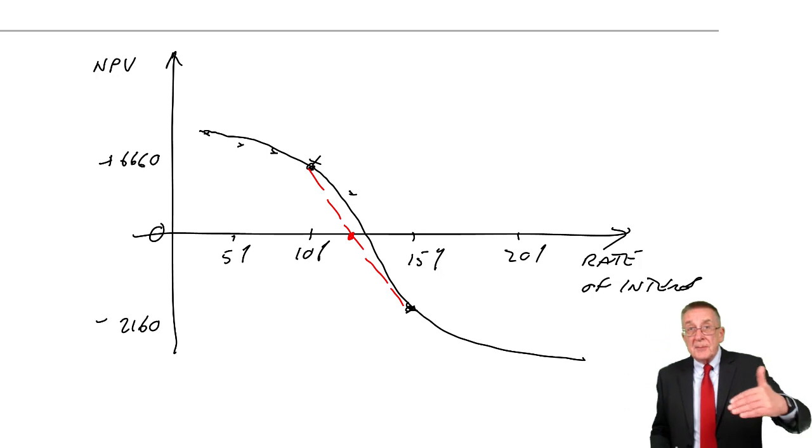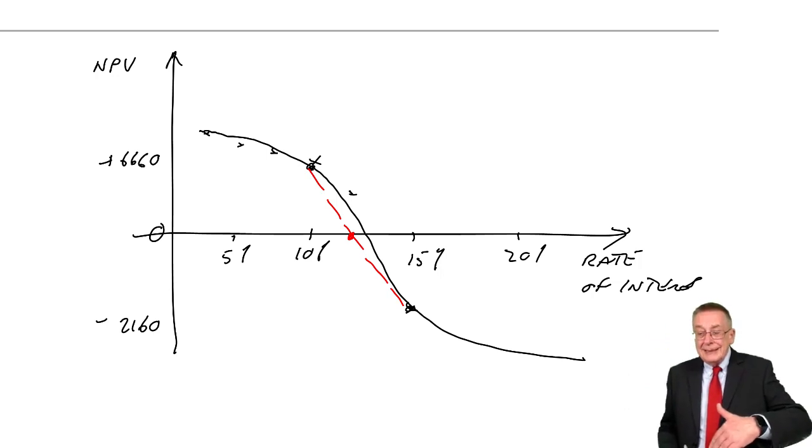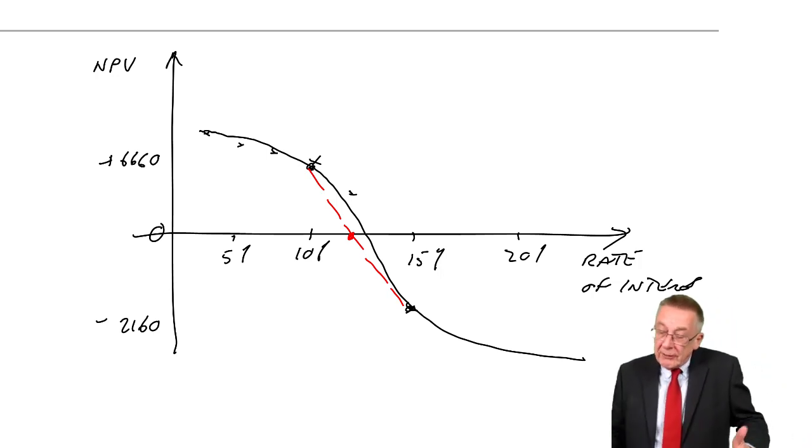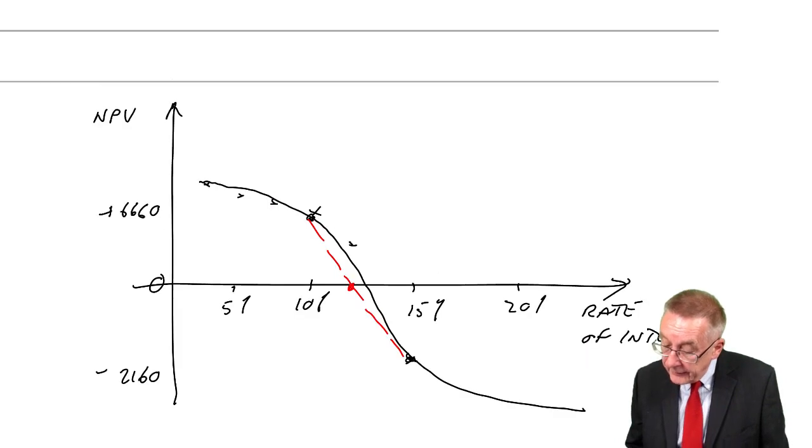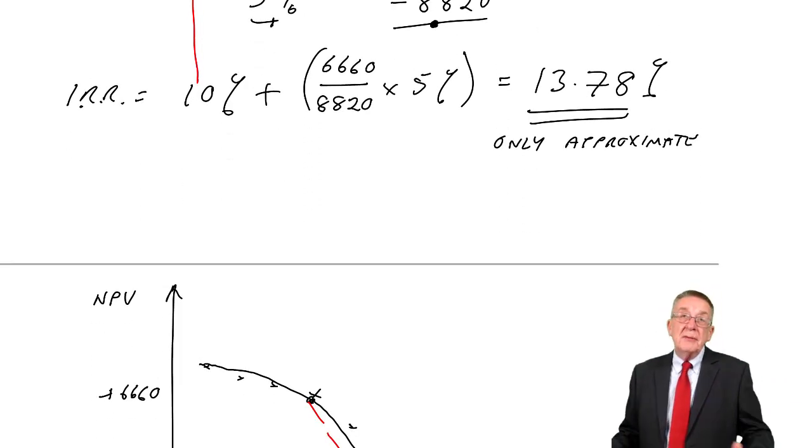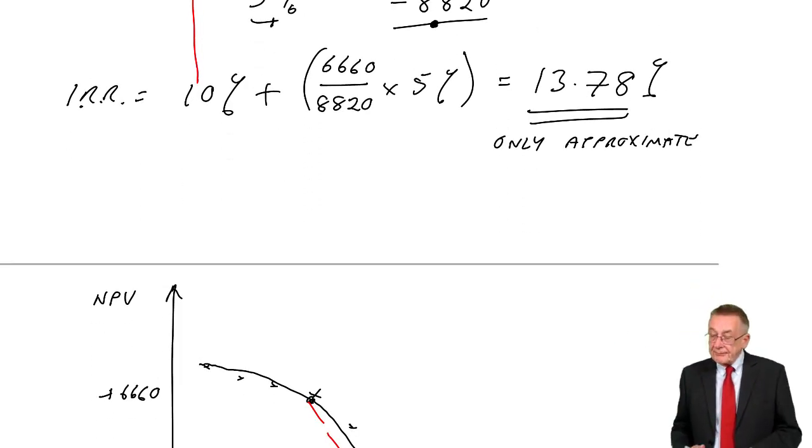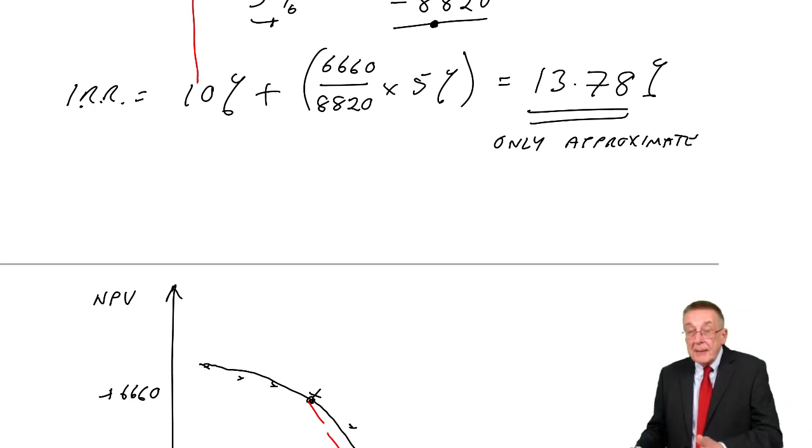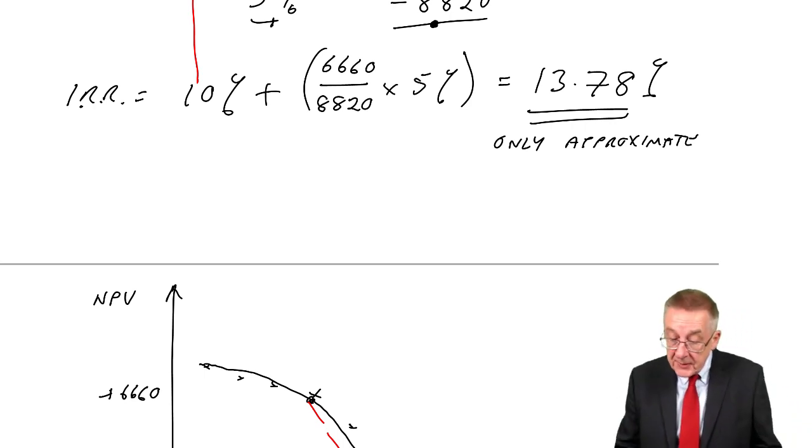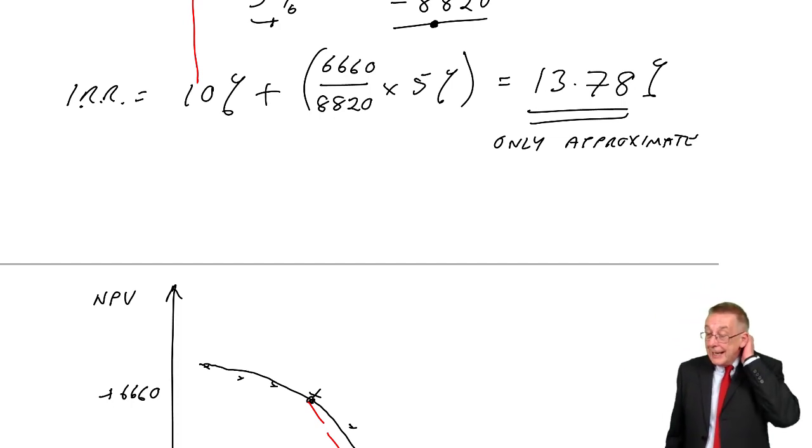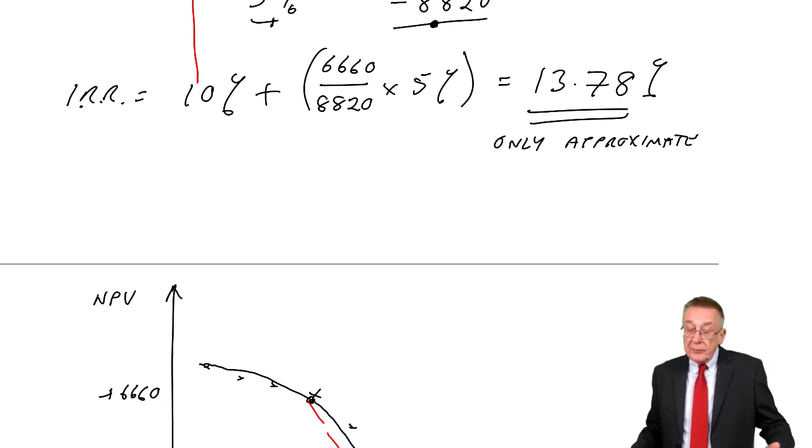Assuming it's linear, we get 13.78 or whatever it was. But as I say, because the relationship's a curve, all we can really say in real life is that it's about 14%. In the exam, leave it to two decimal places. But be aware, it's only approximate. And in real life, we don't need to be precise. In real life, you'll say it's about 14.